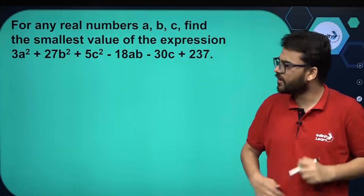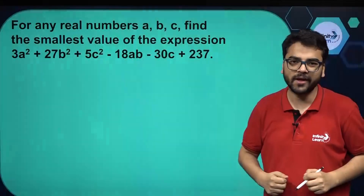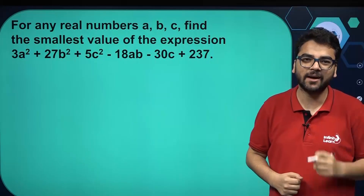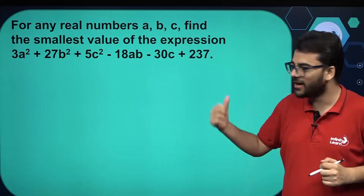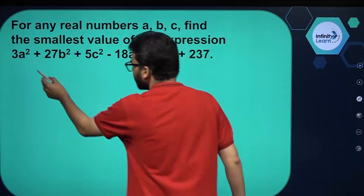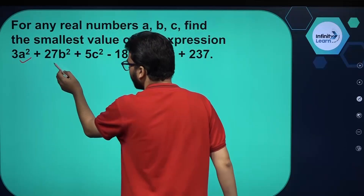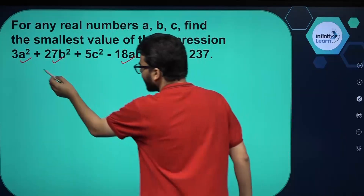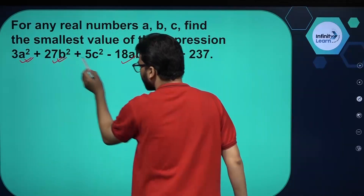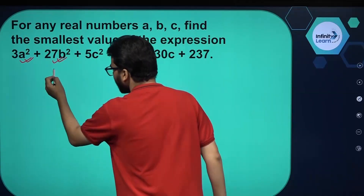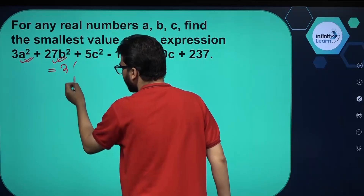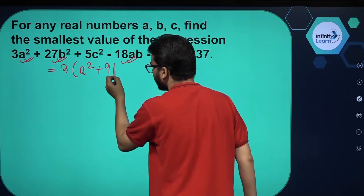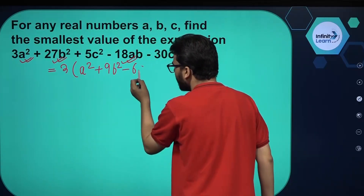We have been given a quadratic polynomial of which we have to find the smallest value. We need to use the completing the square method. So this expression has 3a squared, 27b squared, and minus 18ab. Can we take 3 as common out of these three terms? If we take 3 as common, we are left with a squared plus 9b squared minus 6ab.